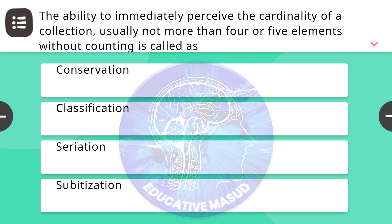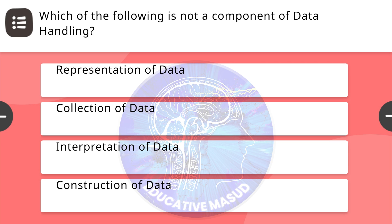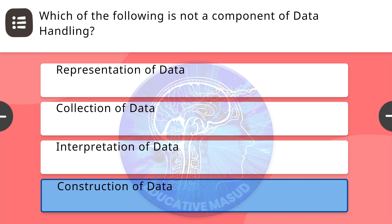Next question: the ability to immediately perceive the cardinality of a collection, usually more than four or five elements, without counting is called? Correct answer is subitization. Next question: which of the following is not a component of data handling? Correct answer is construction of data.